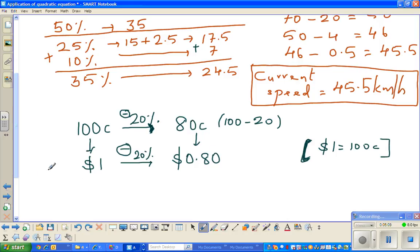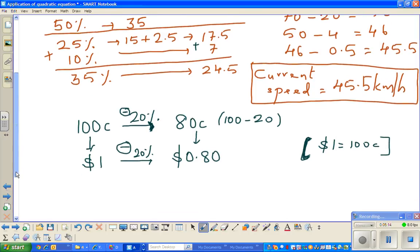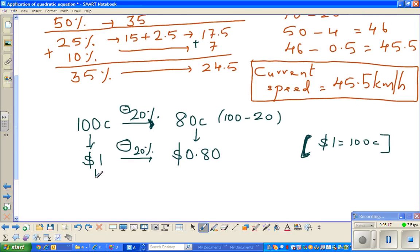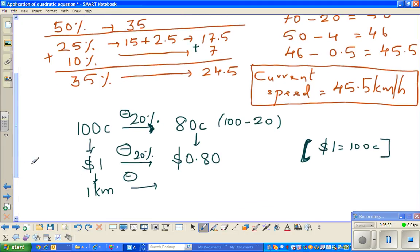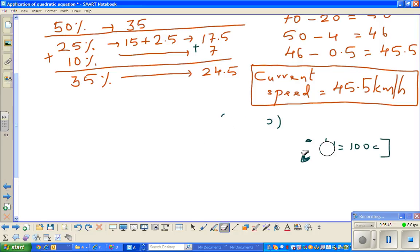This 80 cents can be written like this. Use the same argument. The same argument can be used for 1 kilometer. I should use a different example. I should use 35%. I don't know why I took 20%. Let me do it again.